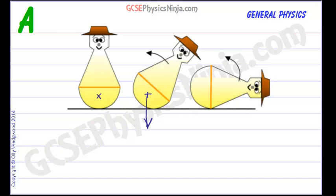The weight force acts down like that. Here's the pivot, and that's going to create a turning effect about the pivot, which means the toy will return to its upright position.